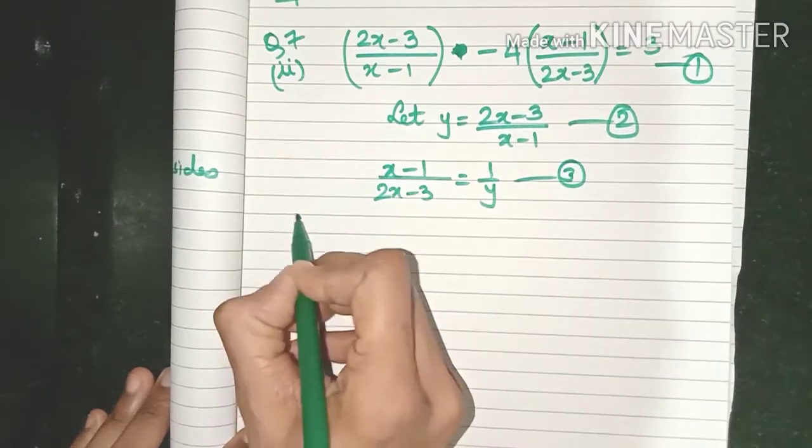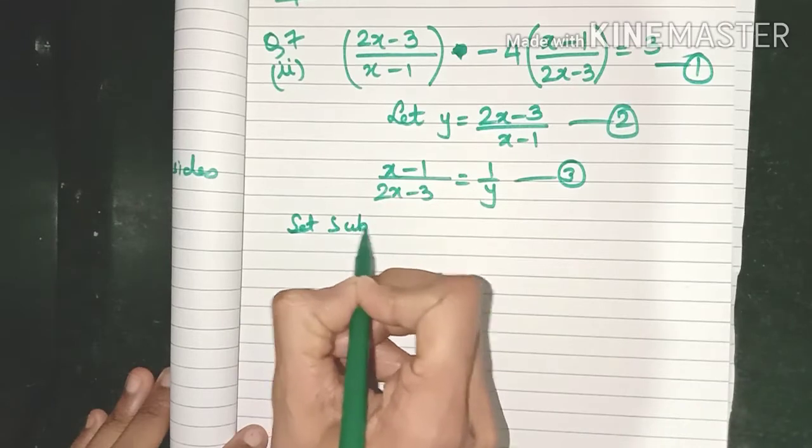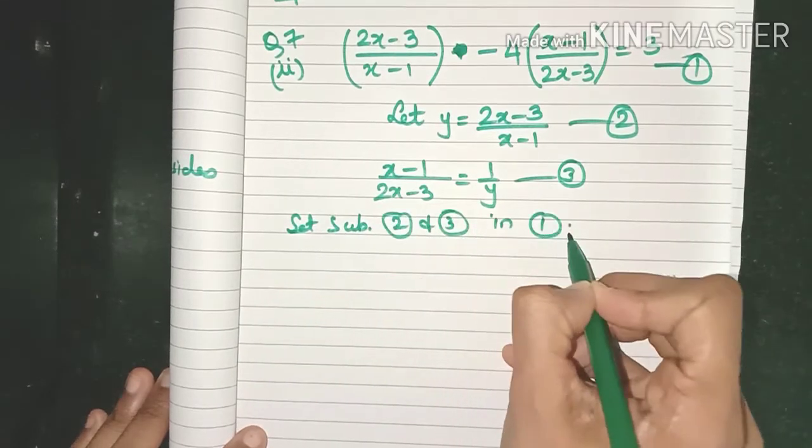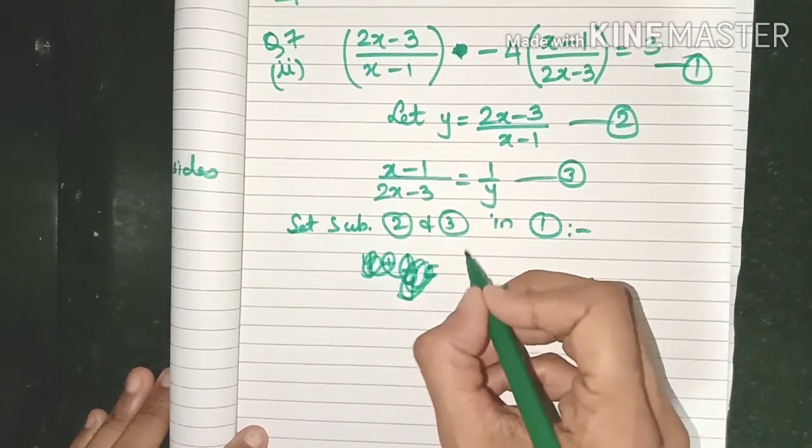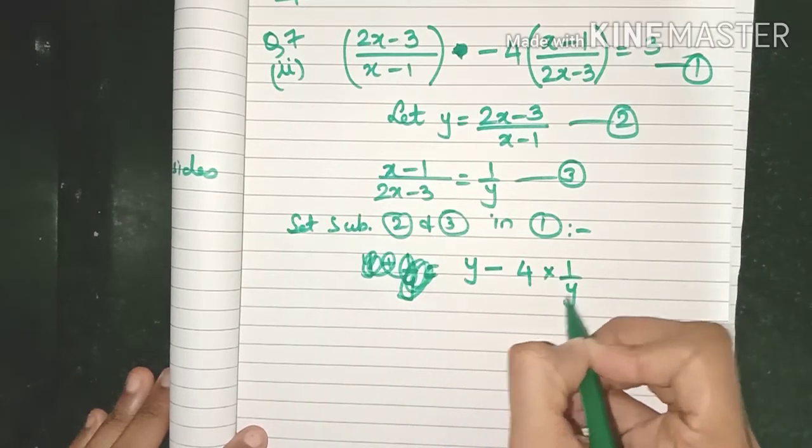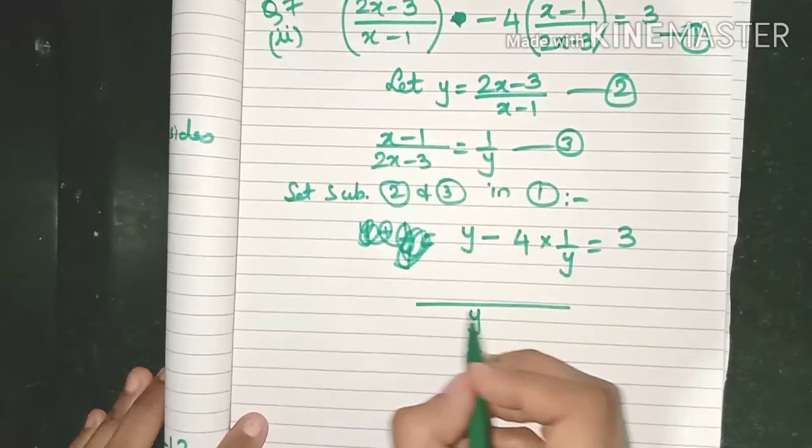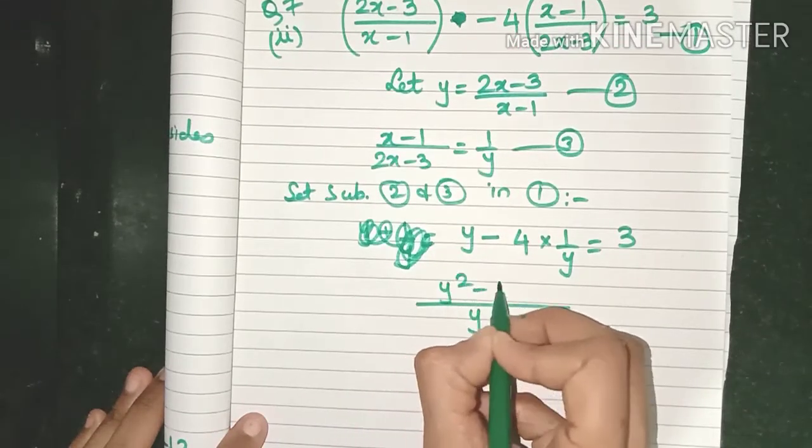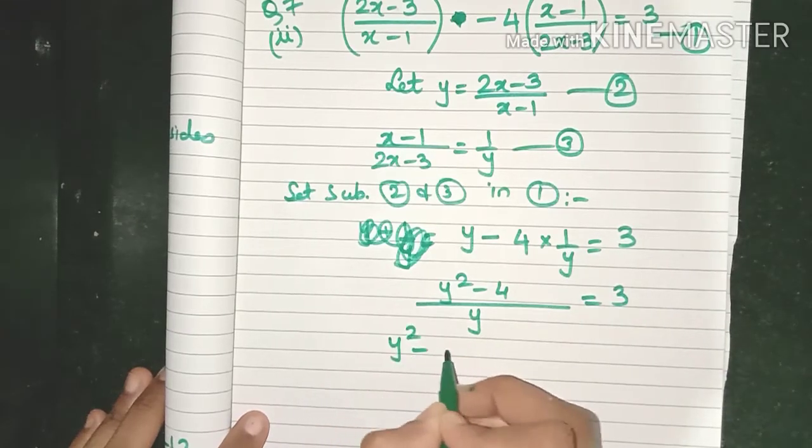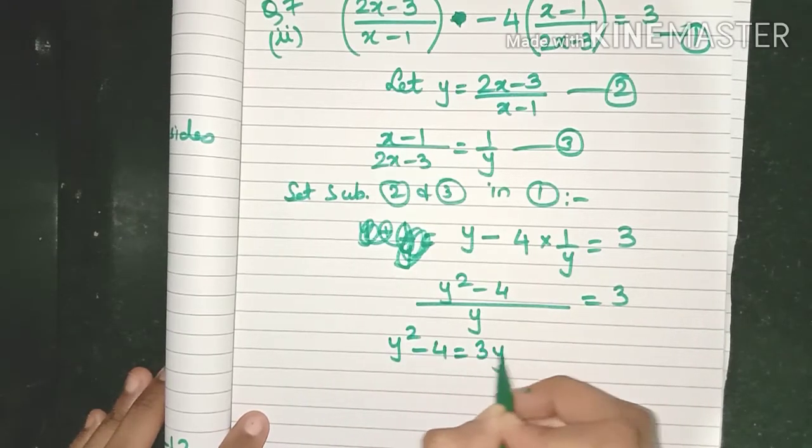Let's substitute equation 2 and 3 in equation 1 and we will get y minus 4 times 1/y equal to 3. Let's do the LCM and simplify this further. So y² - 4 is equal to 3y.